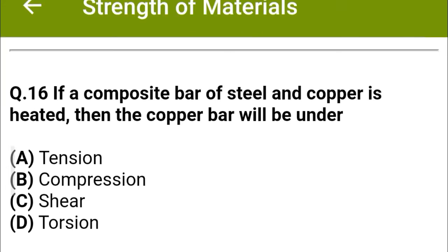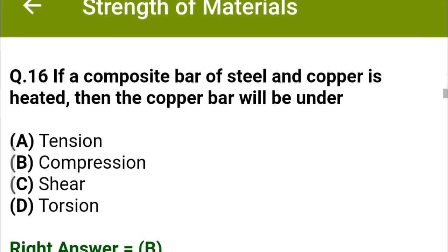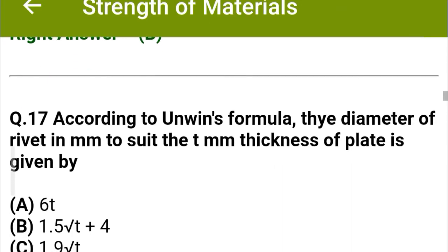Next question: If a composite bar of steel and copper is heated, then the copper bar will be under — option A: tension, option B: compression, option C: shear, option D: tension. The correct answer is option B: compression.